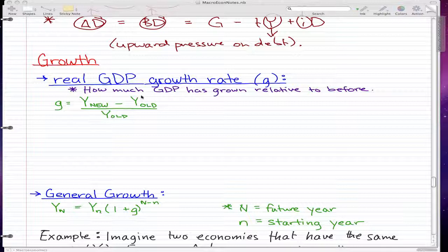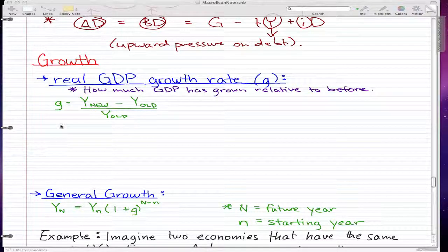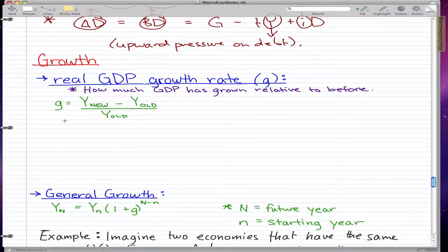So the real GDP growth rate is pretty much how much GDP has grown relative to before. For example, this year compared to the last year.